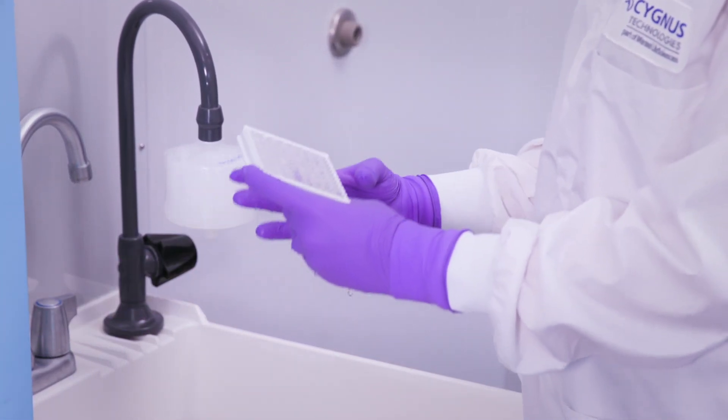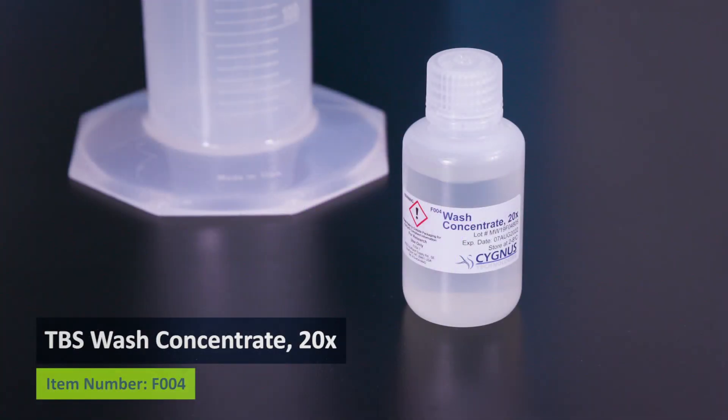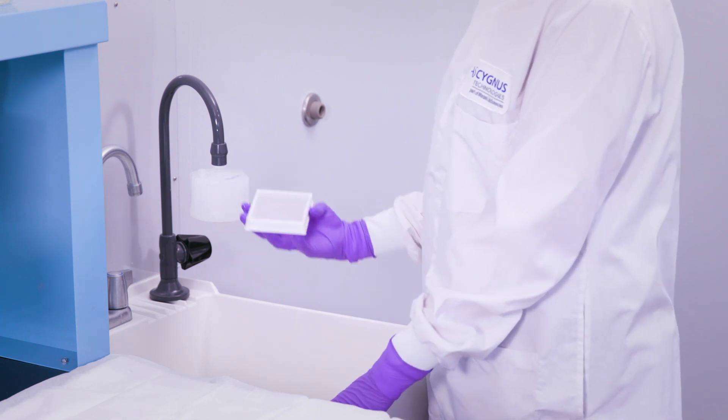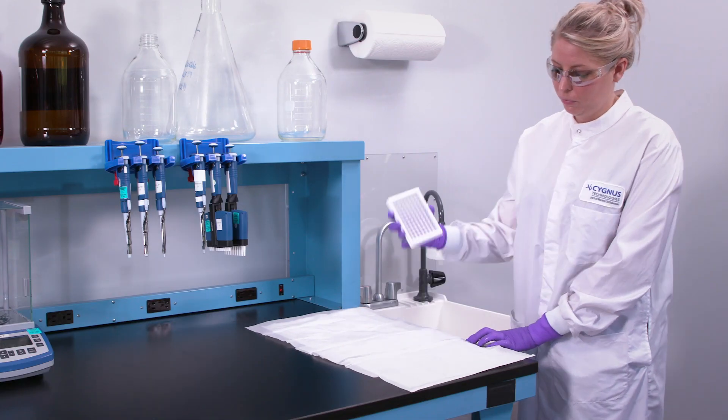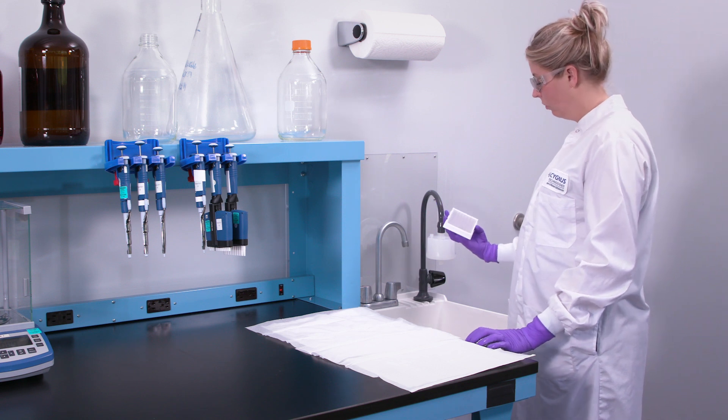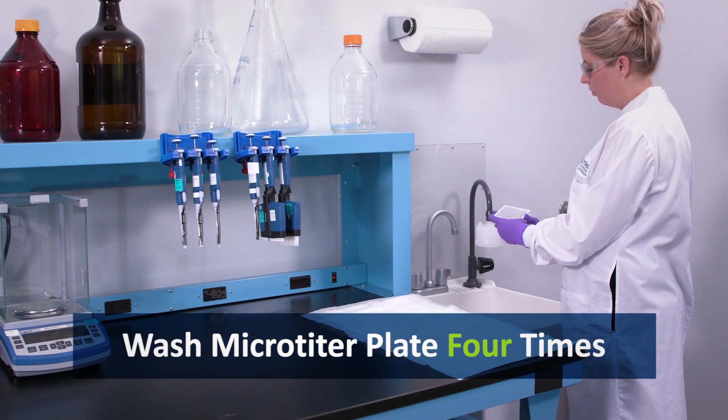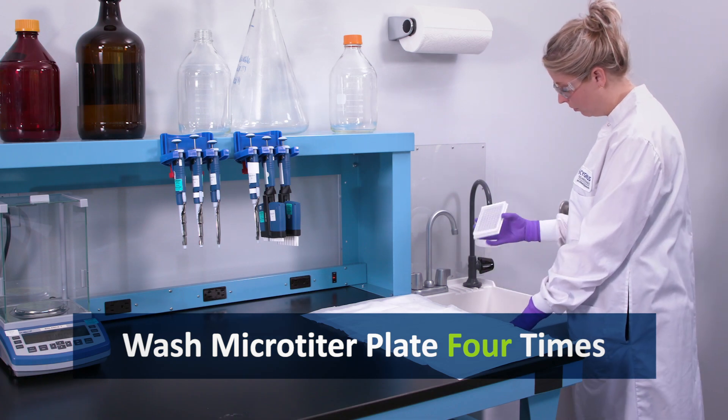Be sure that the wash solution doesn't soak in the wells, and only use the wash solution provided in your Cygnus kit. As soon as the last well is filled, immediately dump and firmly tap the plate on your blotting paper, exactly as you did earlier. Repeat this washing procedure three more times for a total of four washes.